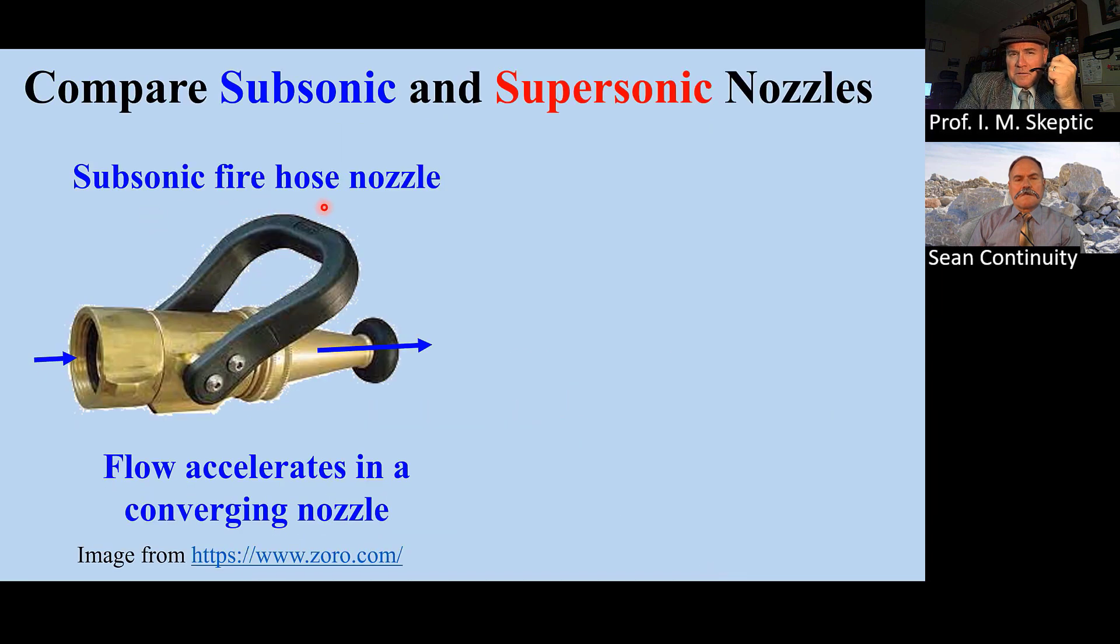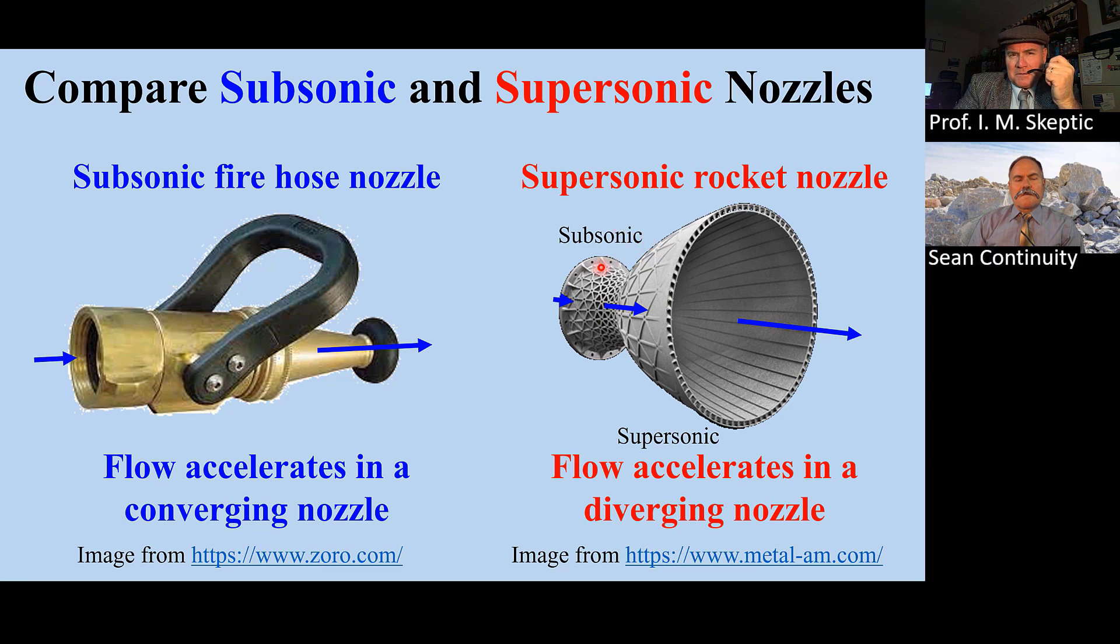Compare a subsonic firehose nozzle—this is a converging duct and the flow accelerates. The rocket nozzle is a supersonic nozzle. The flow is subsonic, sonic, and then supersonic in this diverging part. The flow continually accelerates. That's why rocket nozzles have expanding ducts: to accelerate the flow.